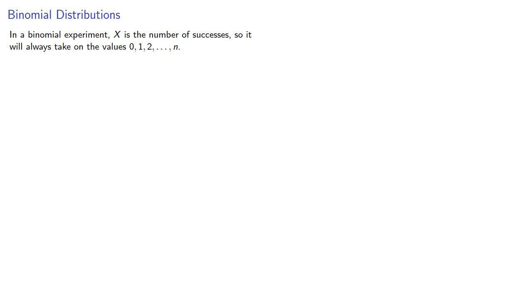So suppose our binomial experiment consists of n trials, and the probability of success on any trial is p. Then our expected value is the sum of the products of the outcomes with their probabilities.